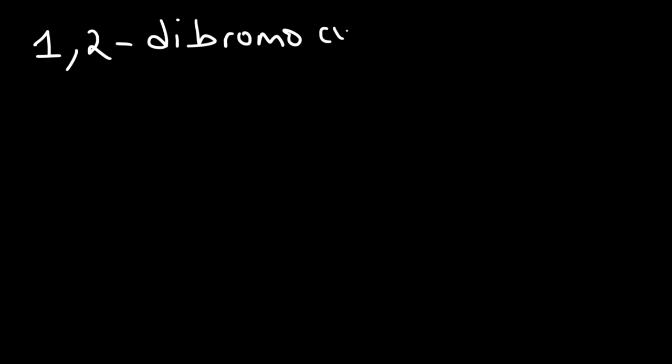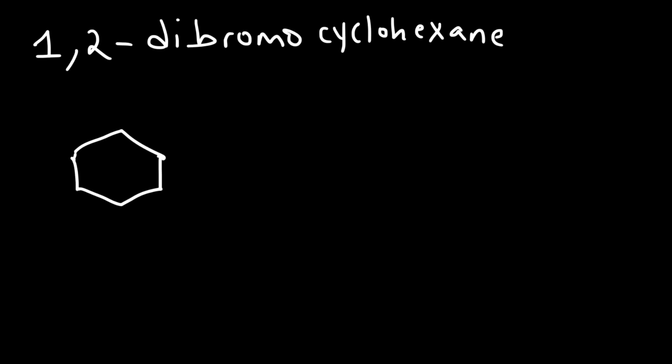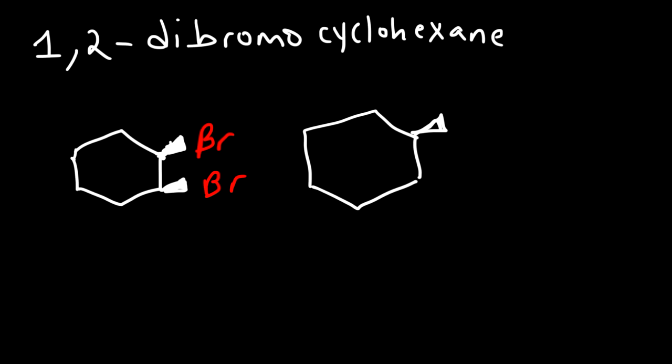Now let's work on another example: 1,2-dibromocyclohexane. Let's draw all the stereoisomers for this molecule. We'll label carbon 1 and carbon 2. That gives us the first stereoisomer. For the second one, let's change one of the chiral centers. These two are diastereomers — let's call them compound 1 and compound 2.